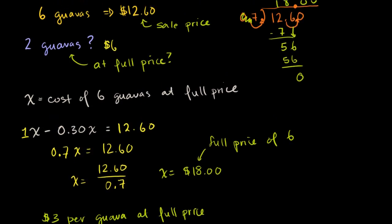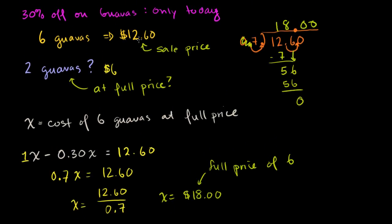So just to give a quick review of what we did, we said the sale price on 6 guavas, $12.60, that's 30% off the full price. Or you could say this is 70% of the full price. So if you say x is the full price of 6 guavas, you could say the full price of 6 guavas minus 30% of the full price of 6 guavas is equal to $12.60. And that's equivalent to saying 70% of the full price is $12.60. Then we just solved this algebraically. Divide both sides by 0.7. And then we got x, the full price of 6 guavas, is $18, or that's $3 per guava, or $6 for 2.